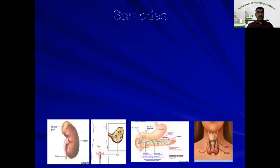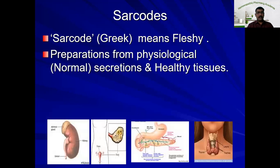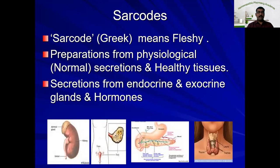The next source is very unique to homeopathy — that is sarcodes. The word sarcode is a Greek word which means fleshy in English. Sarcodes are preparations of physiological secretions — that is, normal secretions and healthy tissues. It also includes secretions from endocrine and exocrine glands, even from hormones. One thing to remember: sarcodes involve normal physiological secretion, healthy secretion, healthy tissues, or any drug prepared from endocrine or exocrine glands or hormones.